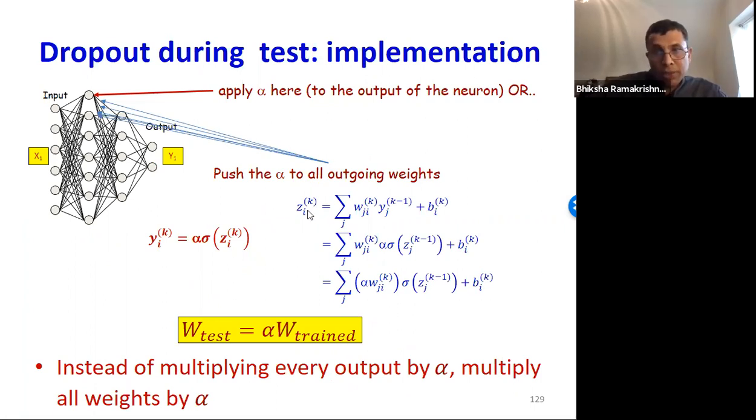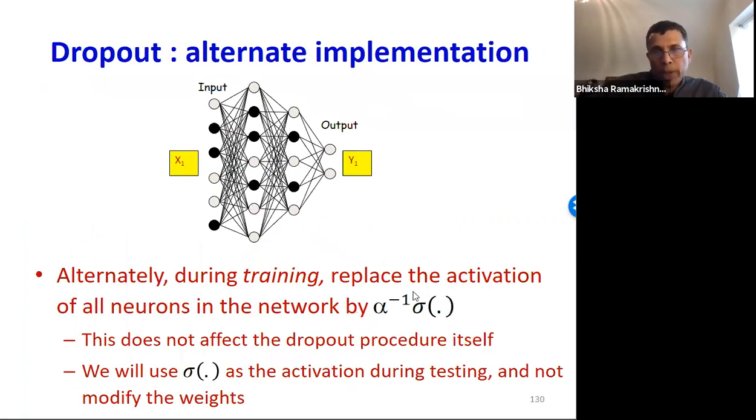Alternately, during training, we can replace the activation of all of the neurons by alpha inverse times sigma, where alpha is the Bernoulli parameter for that neuron. This doesn't affect the dropout procedure itself during training, just testing. During testing, we're going to just use sigma, but during training, we're going to use alpha inverse times sigma. We will not modify the weights.